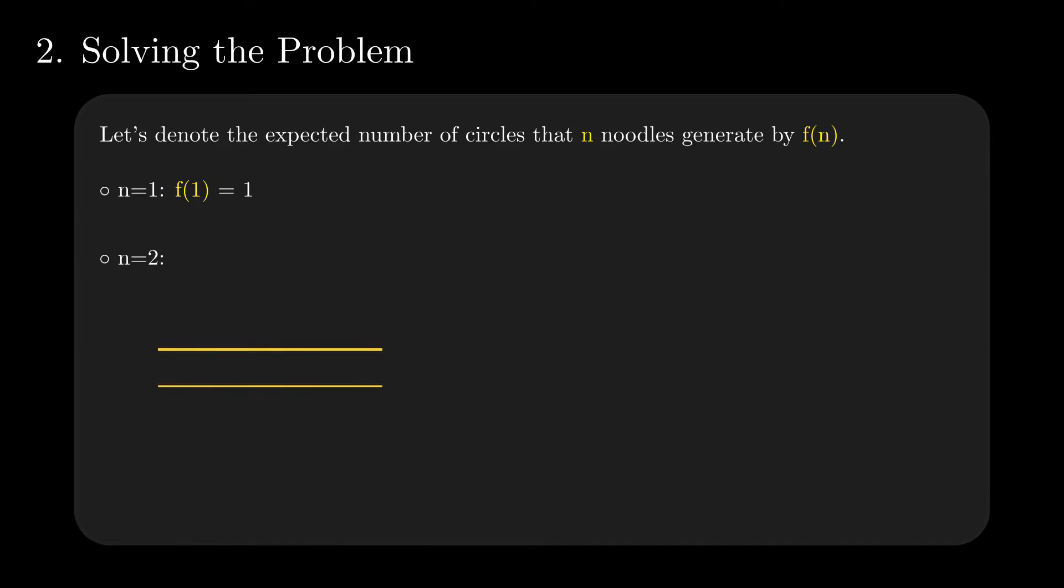In the case of two noodles, what is our first move? We select the first end, then consider it fixed. Only one other end exists for the noodle bordered by our initial choice, making it 1 out of 3 options. We have a 1 in 3 chance of obtaining a circle and a noodle. From this point, it is exactly as when we had a ball with only one noodle. The consequence is that the expected value on this branch is f(1), from the one noodle scenario, plus 1, the supplementary circle created.